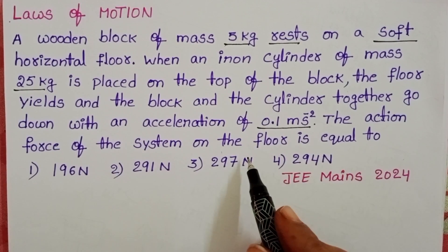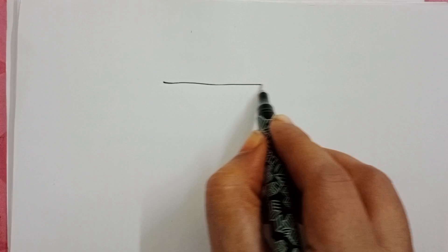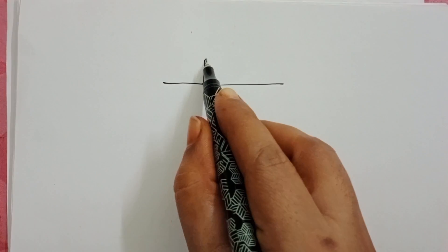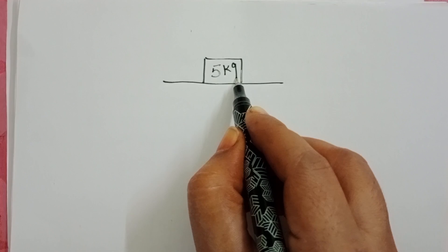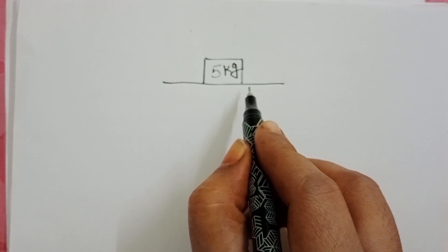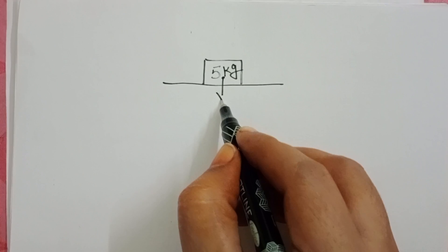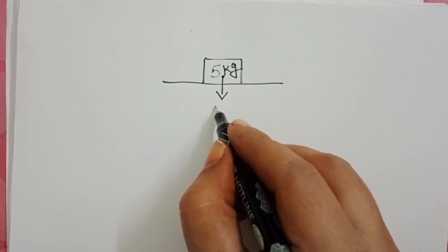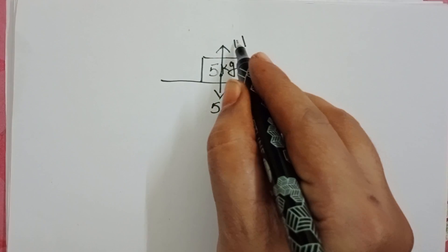The action force of the system on the floor is equal to... In the given question, a wooden block of mass 5 kg is placed on a smooth horizontal surface. This surface is very gentle. Weight of this block acts downward and a normal reaction acts upward.